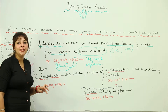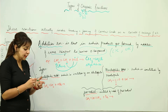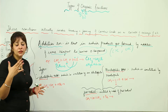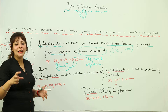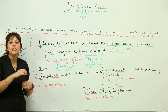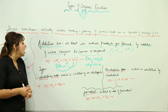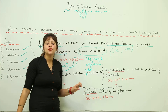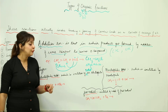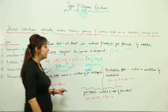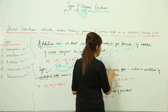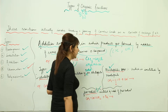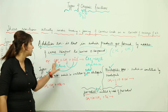Just as we divided substitution depending upon which group is replacing the other — classifying as electrophilic, nucleophilic, and free radical — likewise for addition reactions: if the reaction is initiated by an electrophile, the first atom or group that attaches is an electrophile, then it is called electrophilic addition. If the first group that gets attached is a nucleophile, then it is nucleophilic addition. If it is initiated by a free radical, then it is free radical addition.